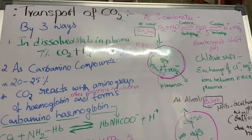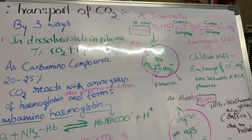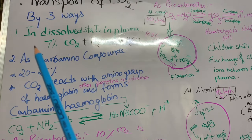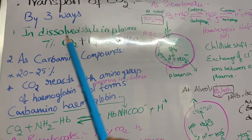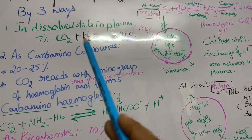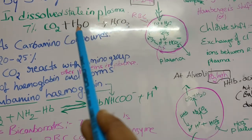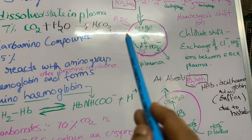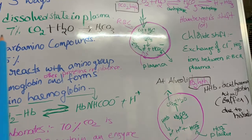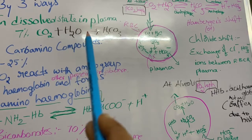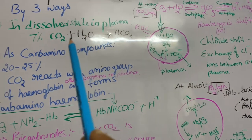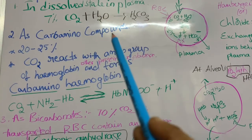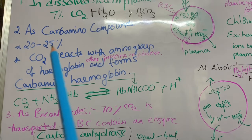The transport of carbon dioxide from tissues to the alveoli occurs by three ways. First, in the dissolved state in plasma — carbon dioxide reacts with H₂O and forms carbonic acid. This reaction is very slow, so only seven percent of carbon dioxide is transported by this method.